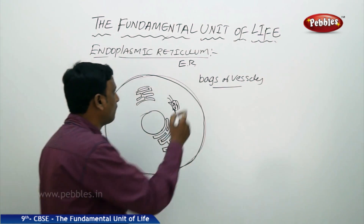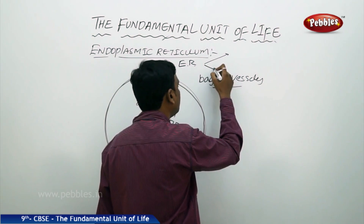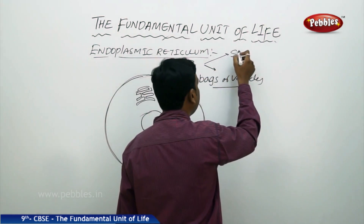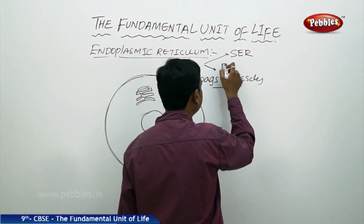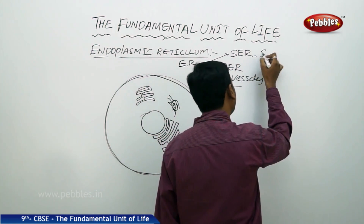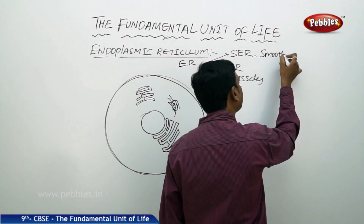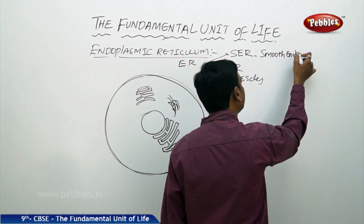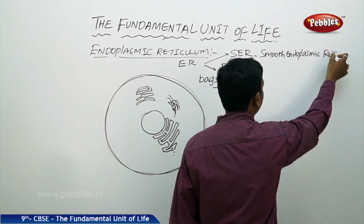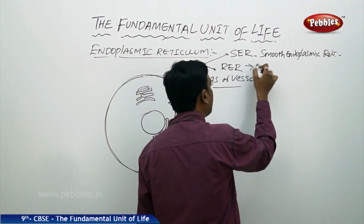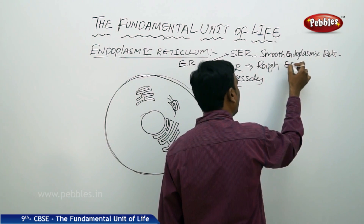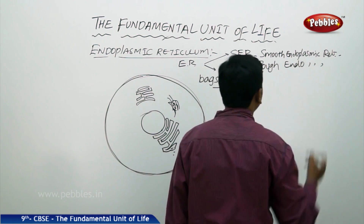Basically we find two different types of endoplasmic reticulum inside a cell. One is SER and the other one is RER. SER stands for smooth endoplasmic reticulum and RER stands for rough endoplasmic reticulum.